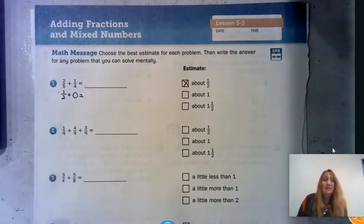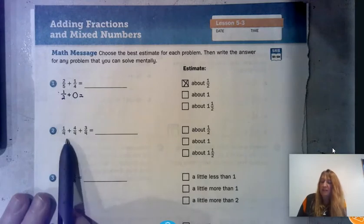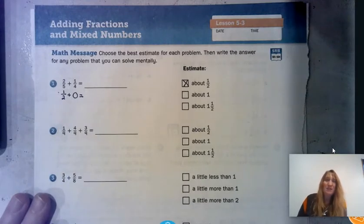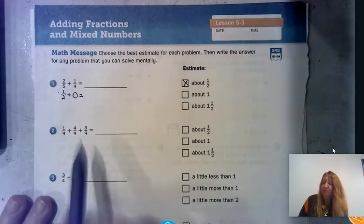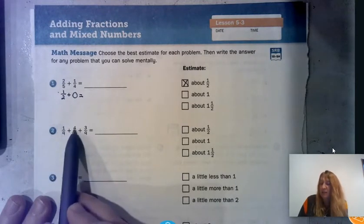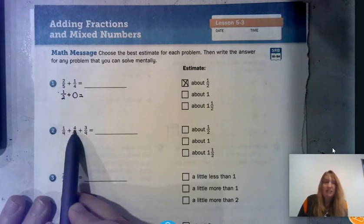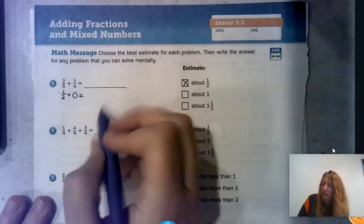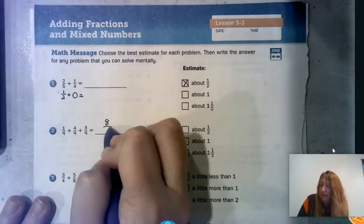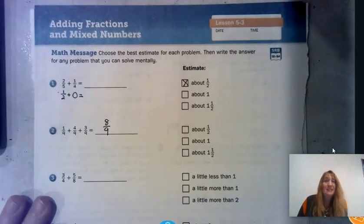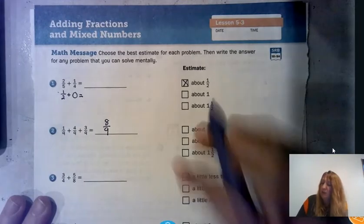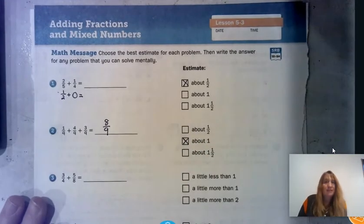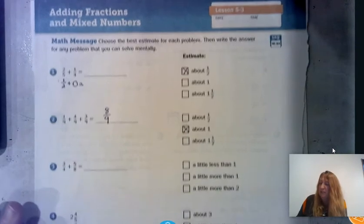Number two has the same denominator for each fraction, which makes it really nice because we can just add across the top. One plus four is five, five plus three is eight, so we're looking at eight-ninths. Eight-ninths is close to one — it's only one-ninth away from one — so our estimate is about one.